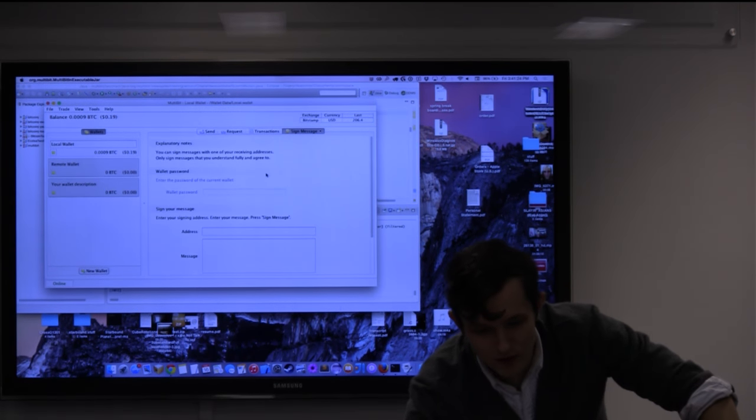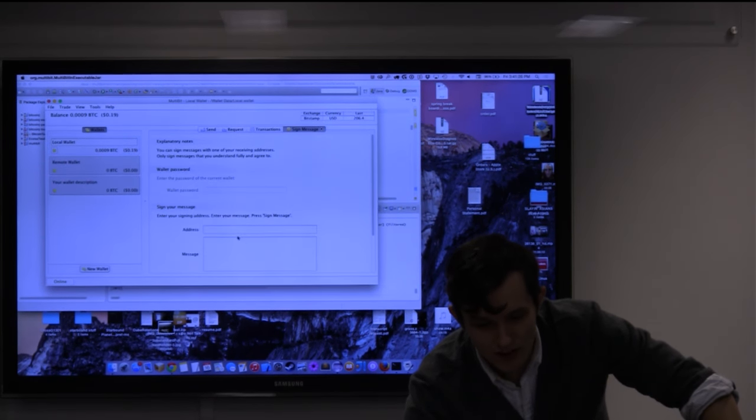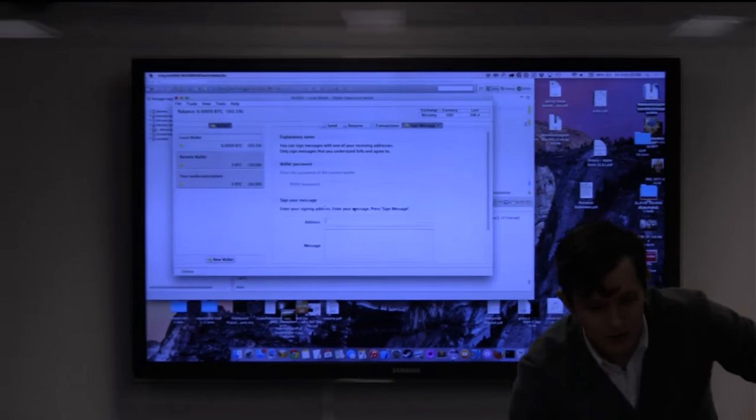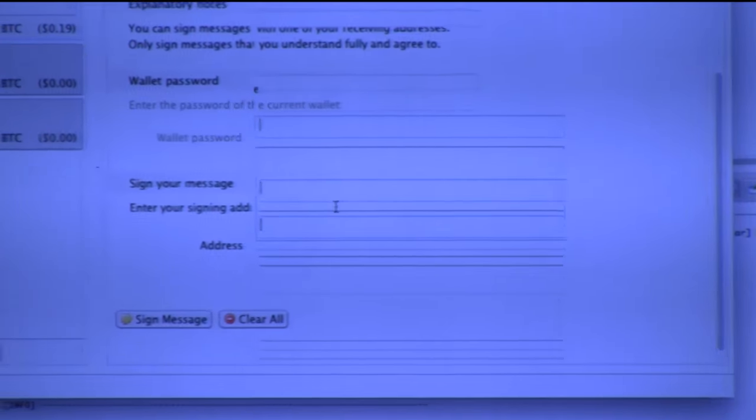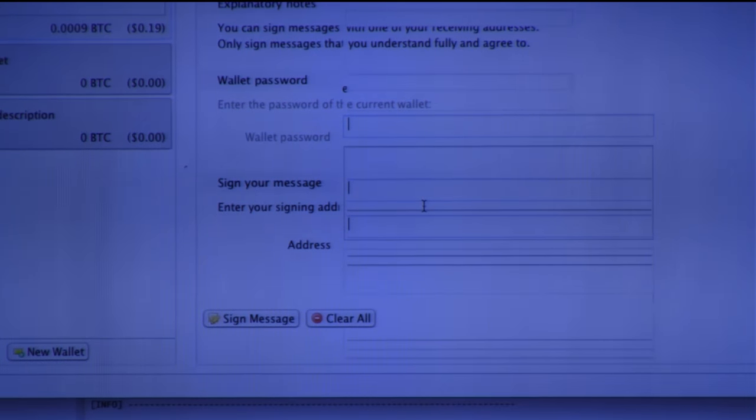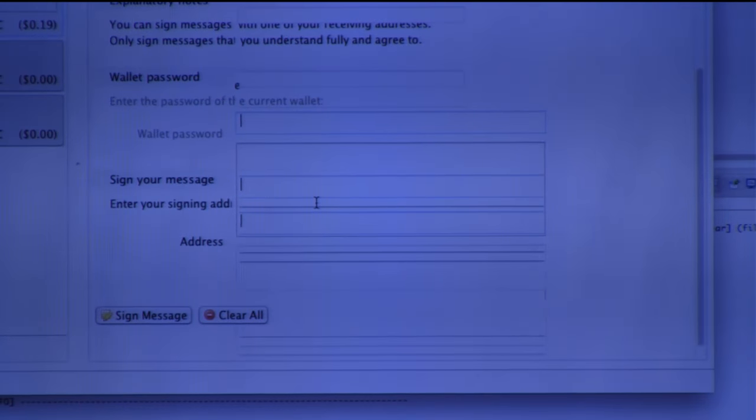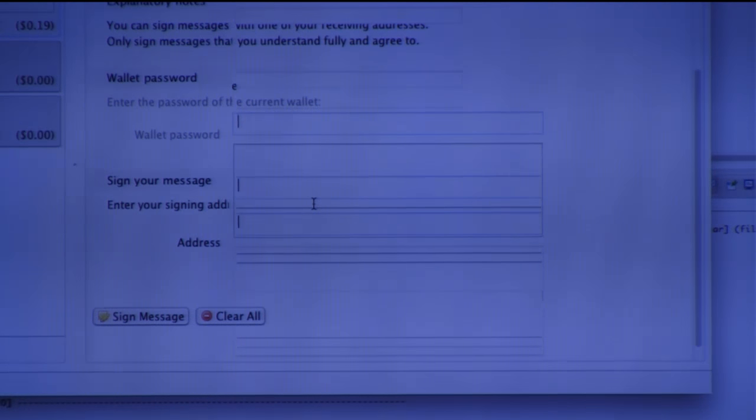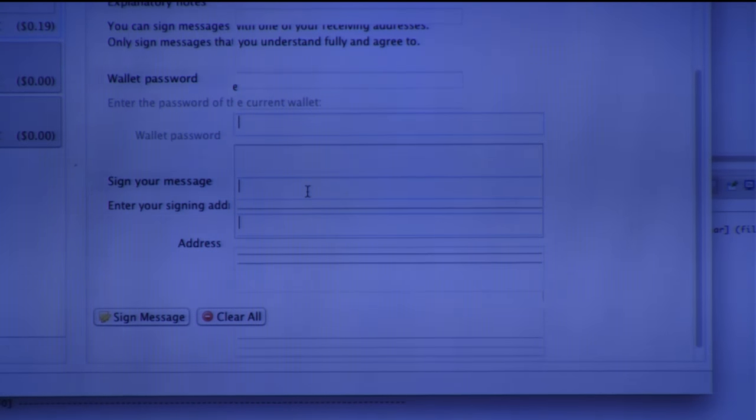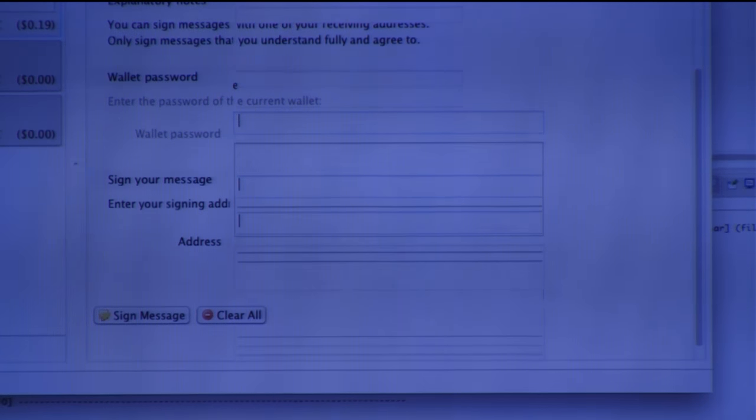So to sign a message, you'll input the address you want and the message, and this is how we end up authorizing transactions through Bitcoin. Does anyone have any questions?